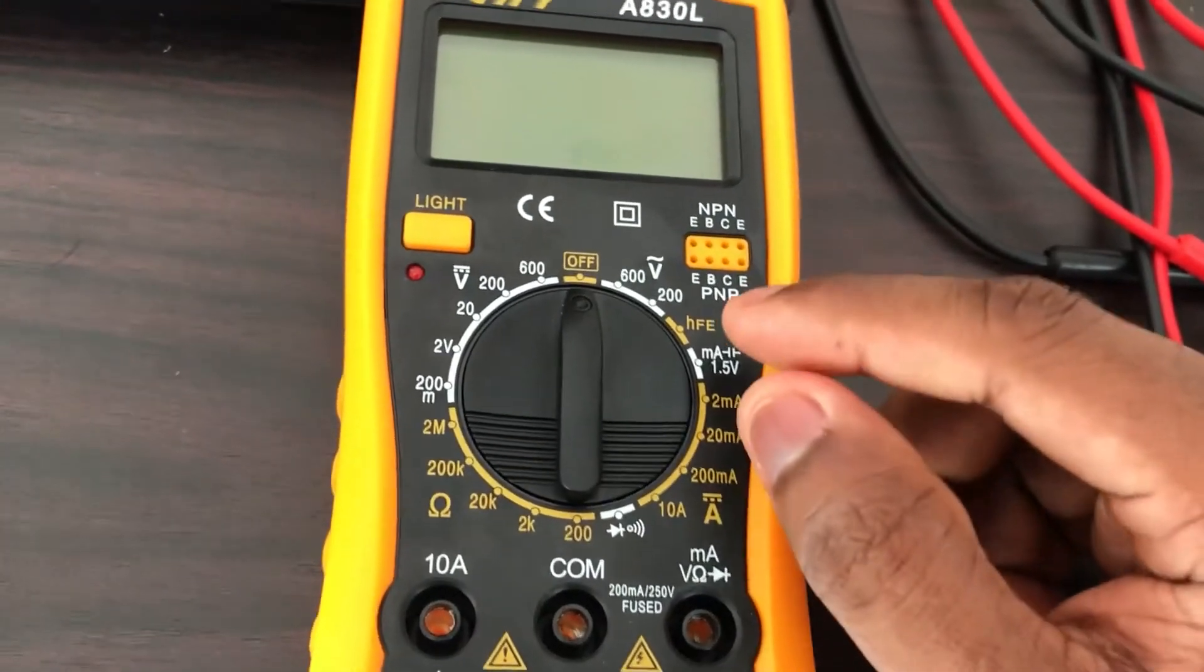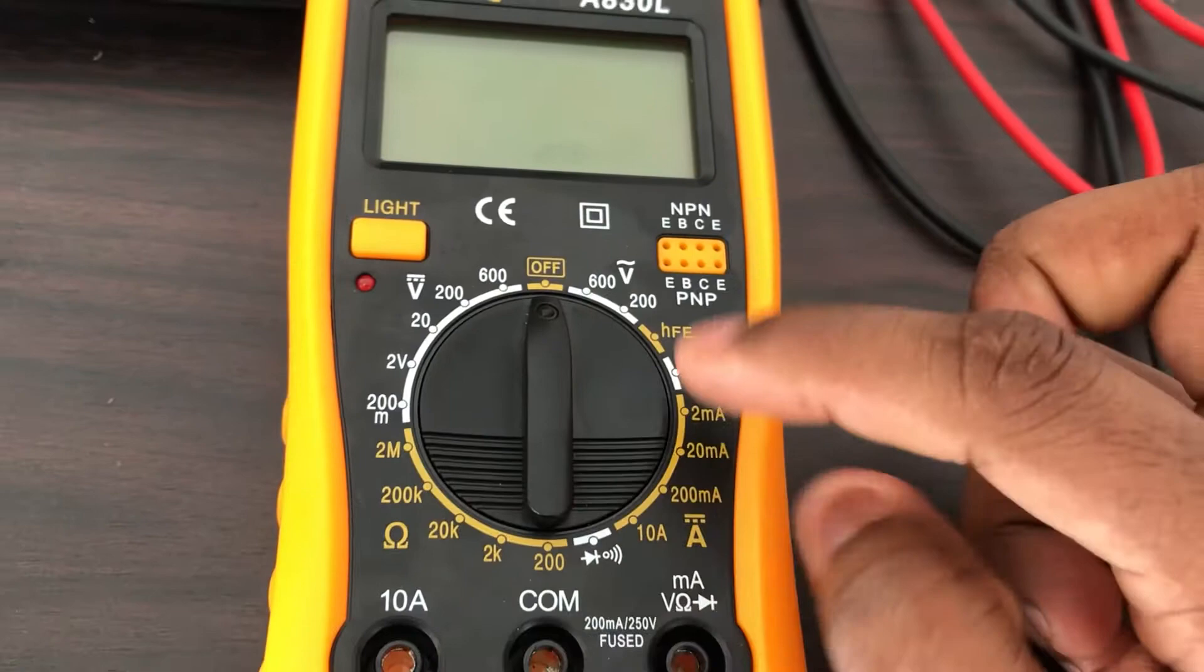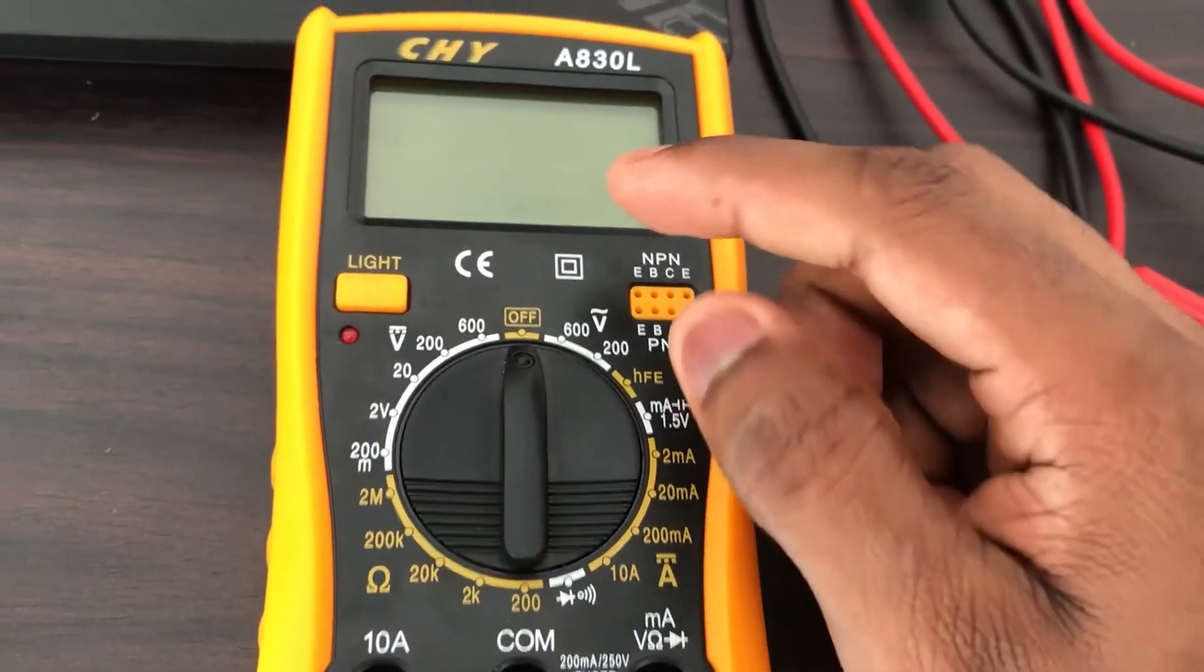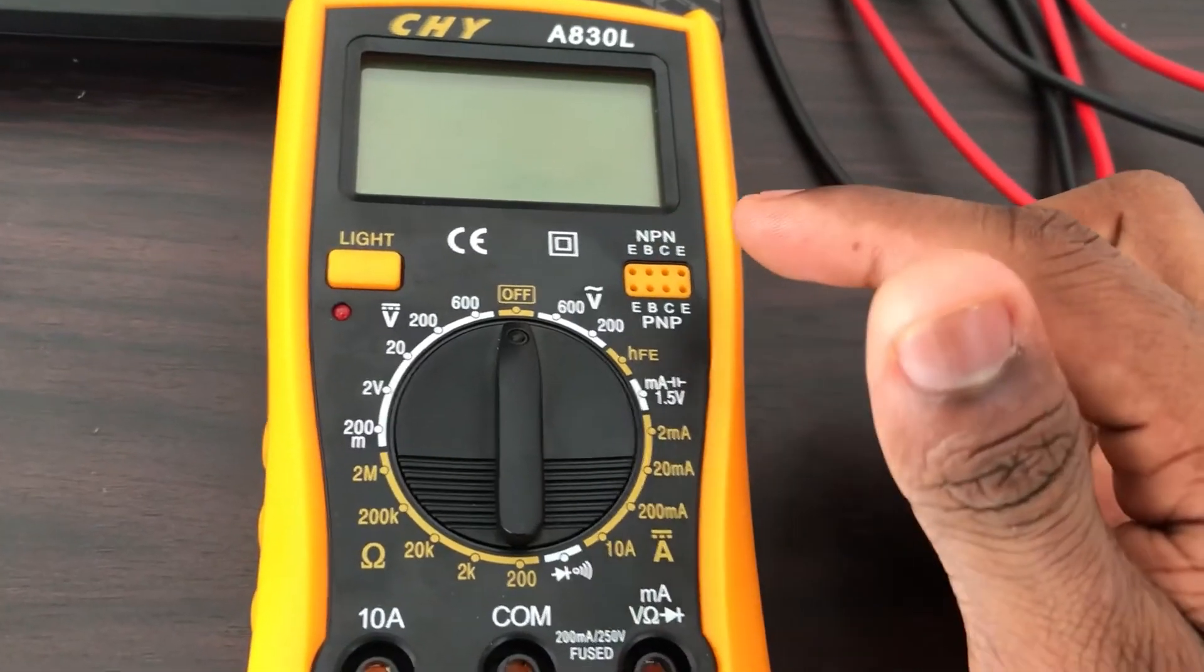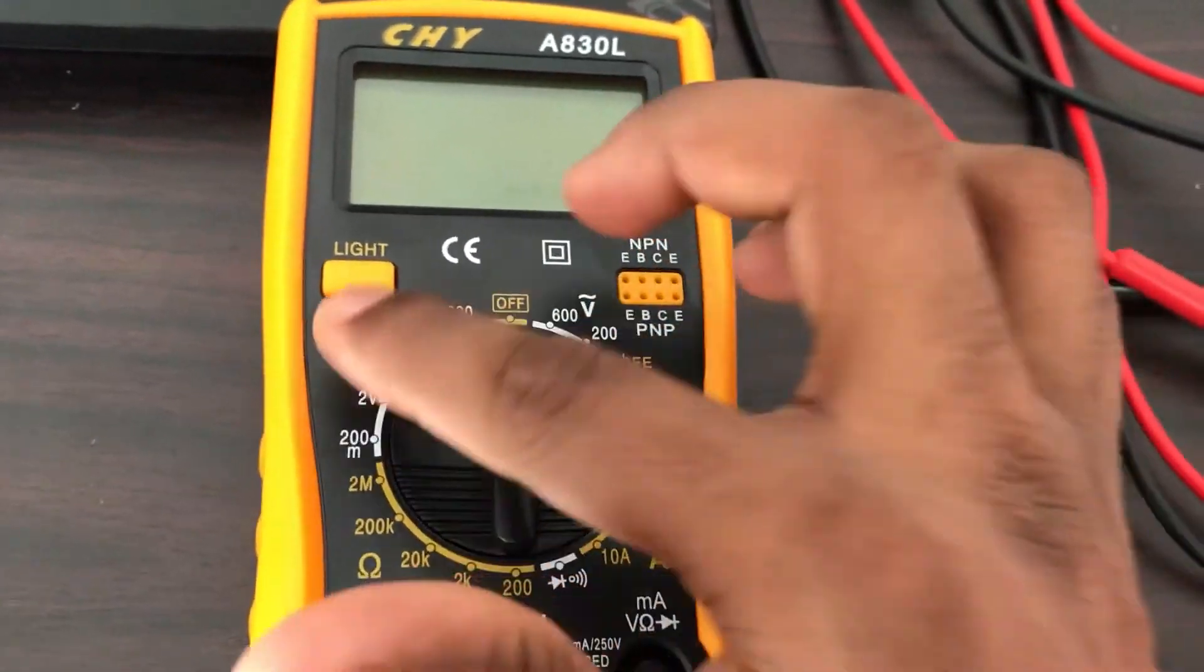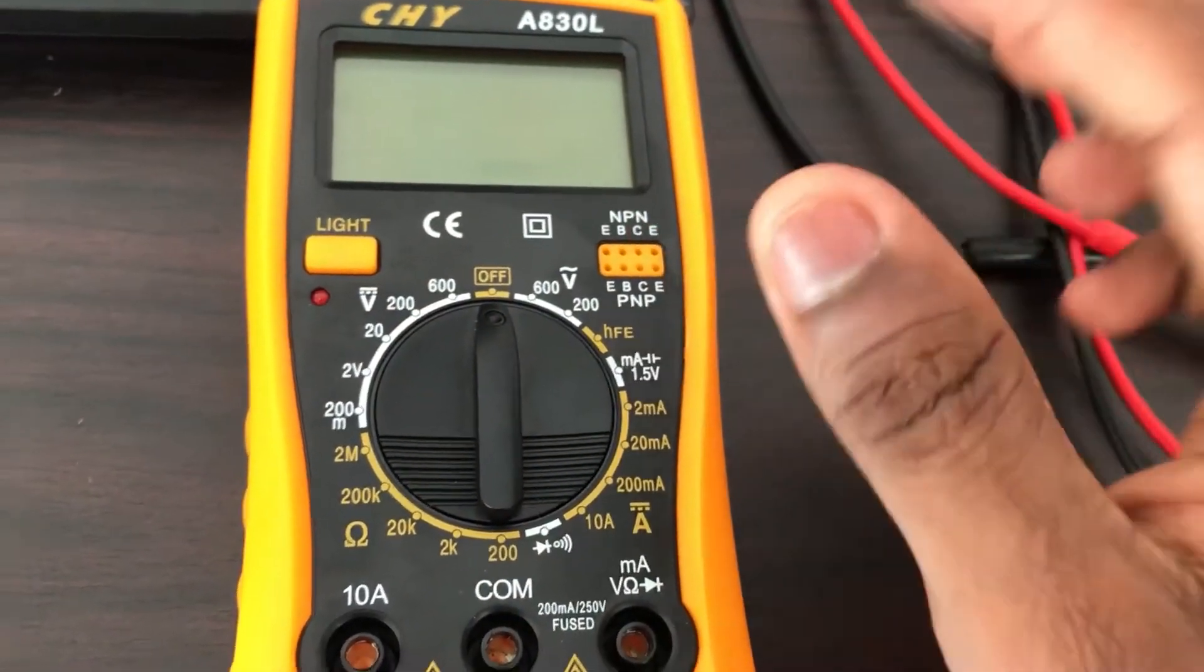I'd like to talk about the basic functions first. When it comes to multimeter, we have a selector switch where you can select what you are measuring. The symbol over here means that this instrument is double insulated and well protected. Here it comes with lights, and some multimeters may have a hold button to hold the reading as well.